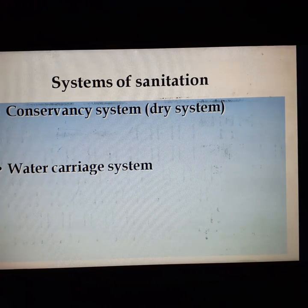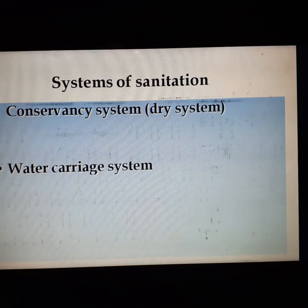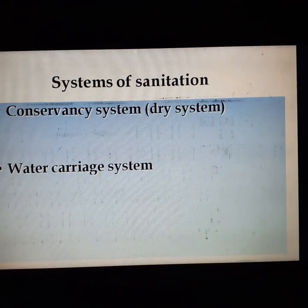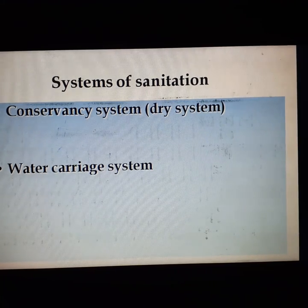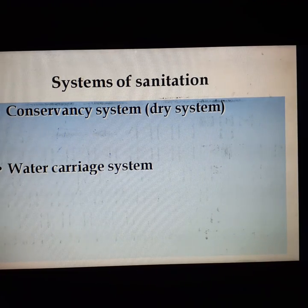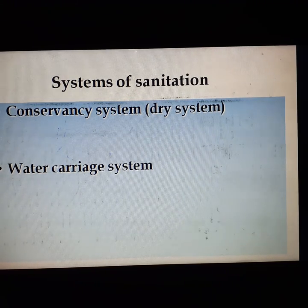There are some disadvantages of the conservancy system: it is a health hazard to the personnel handling the sewage, and it is an inhumane practice and social injustice. Next is the water carriage system. The waste from water closets is collected by flushing with water, and this water is used to transport the waste to treatment works by a system of pipes — that is the water carriage system.